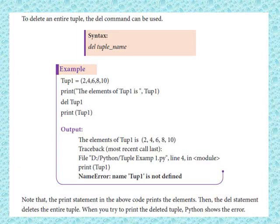Looking at the output: 'the elements of tube one is' — if we have any value, then it is displayed. But the last print function after deletion will display a name error. The print statement in the above code first prints the elements, then the del statement deletes the entire tuple. When you try to print the deleted tuple, Python shows an error.